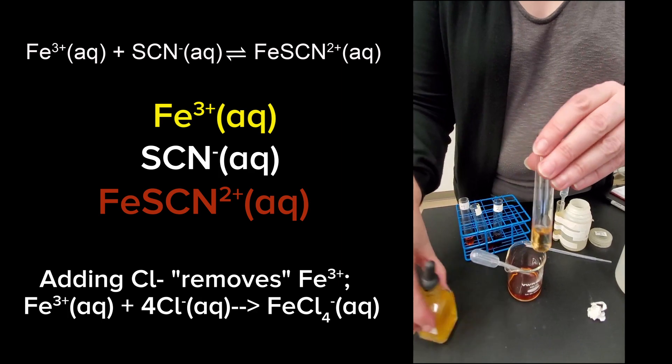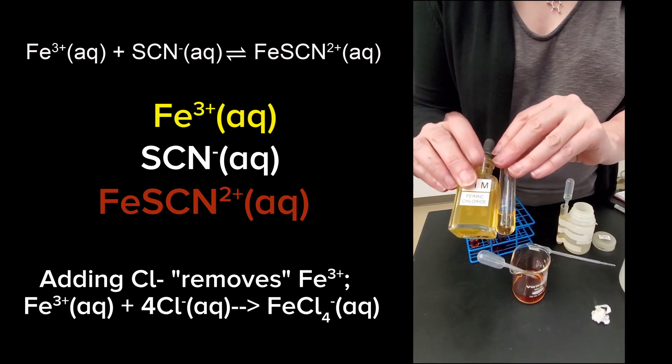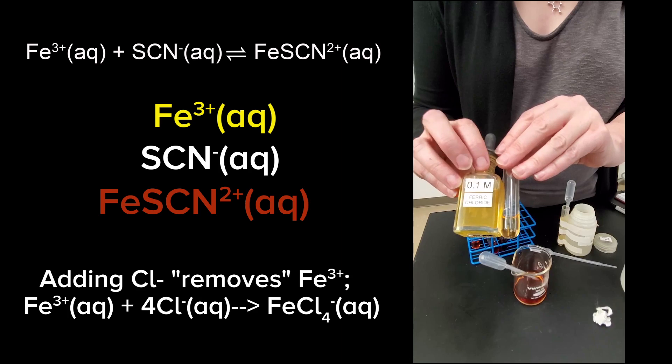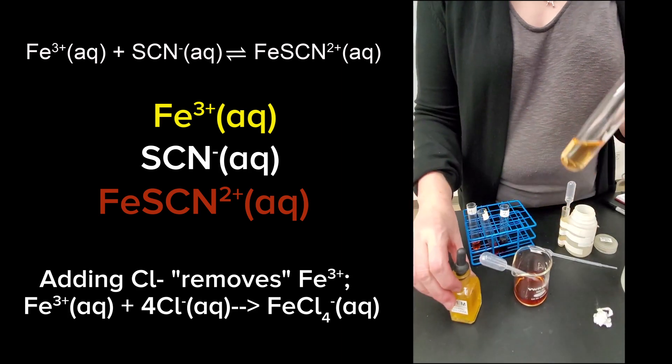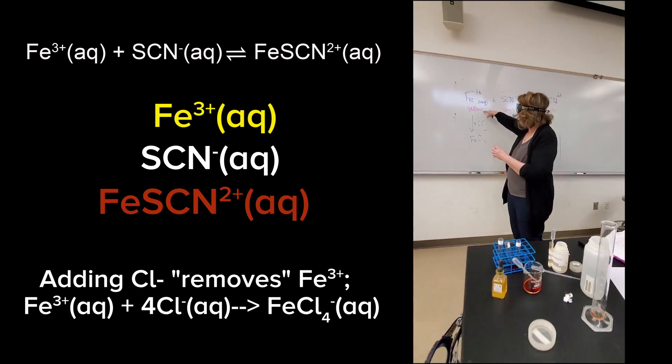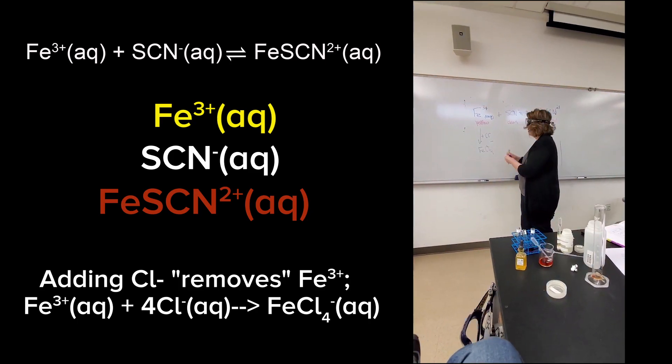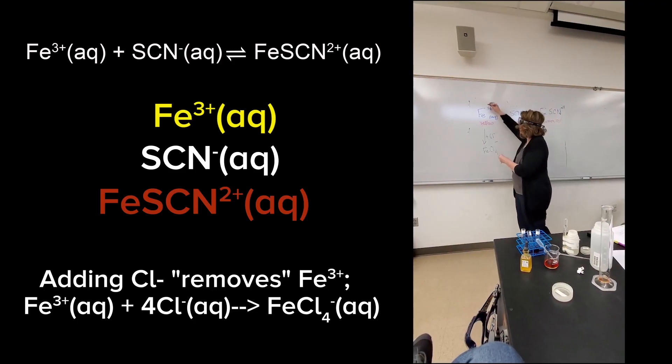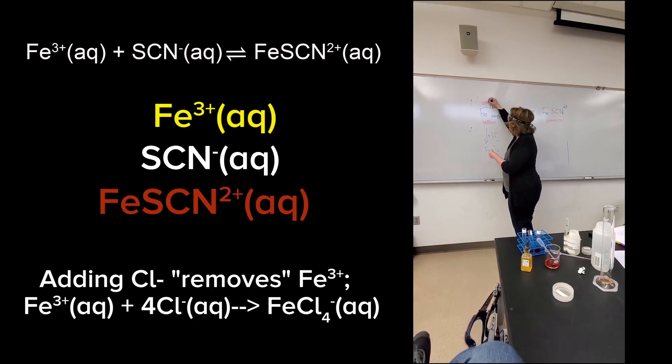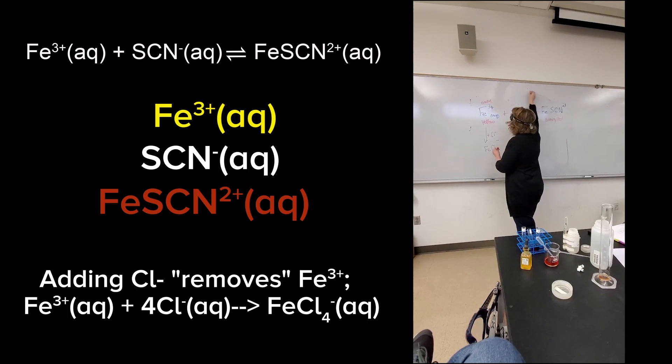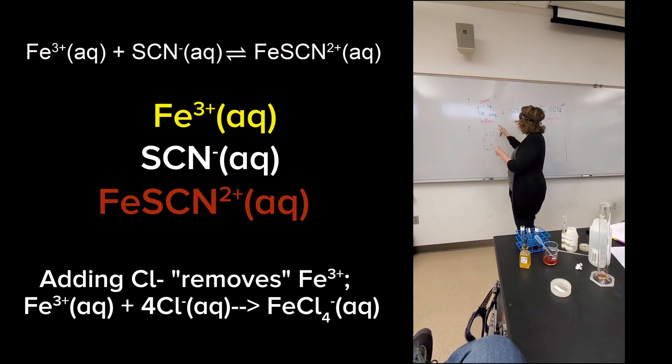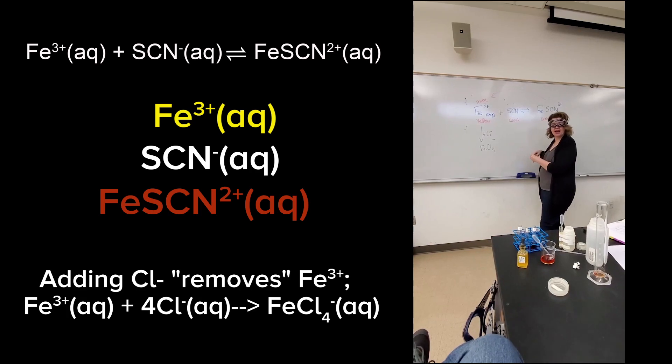And in fact, if I compare it, we're getting very close to the original ferric without any thiocyanate. So adding that chloride removes the iron. It's effectively removing this. So we get a shift to the left to replace it, which makes the brown color go away.